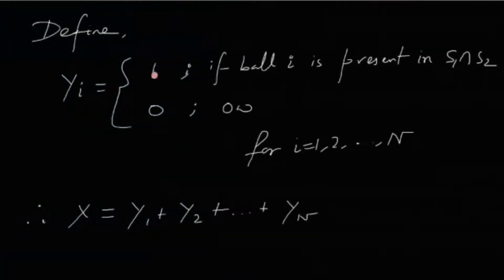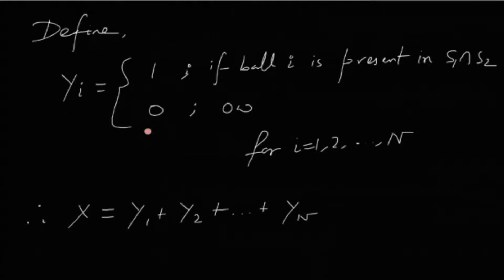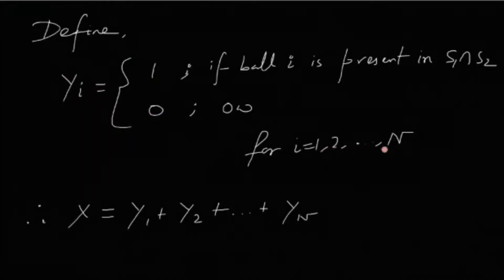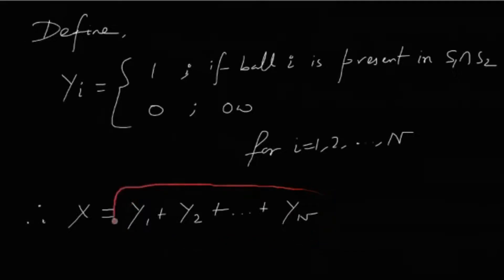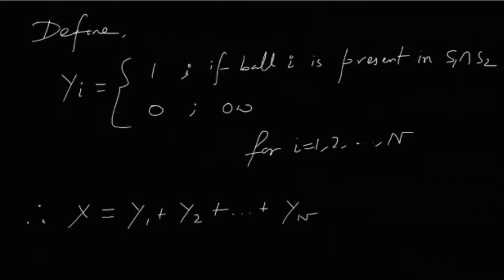Define Y_i = 1 if ball i is present in S1 ∩ S2 (i.e., present in both samples), and Y_i = 0 otherwise, for i = 1, 2, ..., N. Notice that X = Y1 + Y2 + ... + Y_N, because if there are exactly k balls in common, exactly k of the Y_i's equal 1 and the rest are 0, so their sum equals k. By the additive property of expectation, E[X] = Σ E[Y_i].